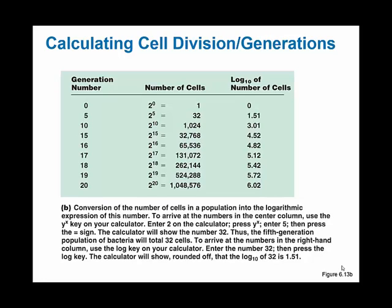In your textbook there's a table that can help you calculate some fairly large numbers. Calculating one generation time starting from one bacterium is easy to do in your head, but 15, 20, or 40 generations produce overwhelming numbers. The table shows generation numbers on the left: zero generations gives you one cell; five generations gives 32 cells; 16 generations gives 65,536 cells. We can use a scientific calculator with a Y-to-the-X key to do these calculations easily. You enter the number 2, press Y-to-the-X, then enter the number of generations — for example, 5 — and press equals. The calculator should show 32.